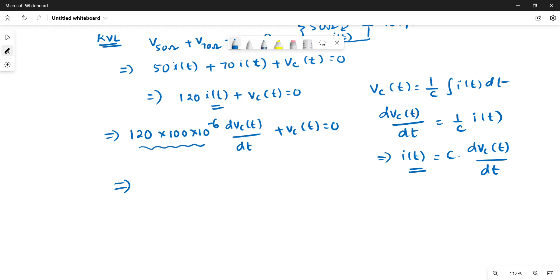This derivation we have already done in the RC section, where the equation is of the form dx by dt plus bx is equal to zero. That formula is written in this form.